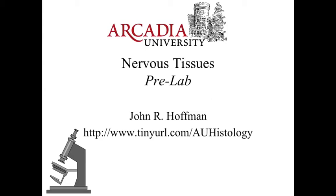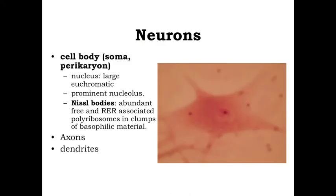Hello and welcome to our pre-lab presentation on the nervous tissues. When we take a look at the nervous tissues, keep in mind that there are two categories of cells that can be present. The first cells are going to be the neurons, and these are the cells that are specialized for the sending and receiving of electrical and chemical signals throughout the body.